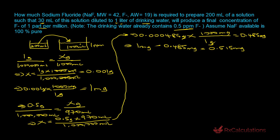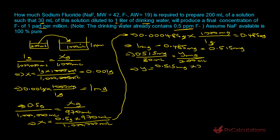This 0.515 mg of fluoride is present in the 30 mL taken from the 200 mL stock solution. We need to scale up to find how much fluoride is in the full 200 mL solution. Solving for y: y = 0.515 mg × 200 mL ÷ 30 mL = 3.43 milligrams of fluoride ion in the 200 mL solution.